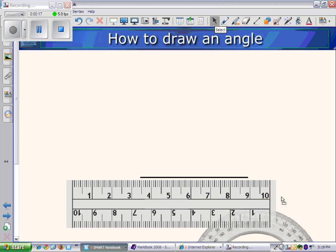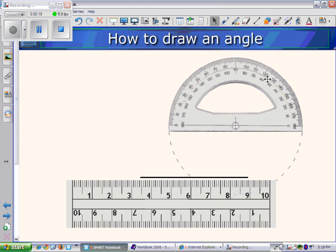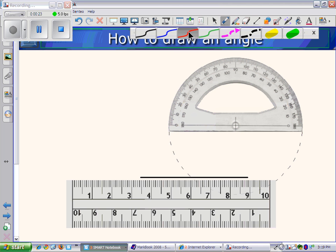Next, we take our protractor. We're going to be looking at matching the vertex, which is shown here by the crosshair. We're going to match that to one end of the line we just drew.